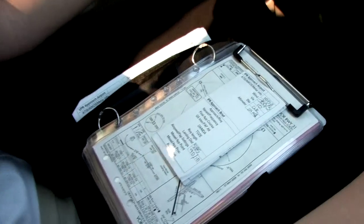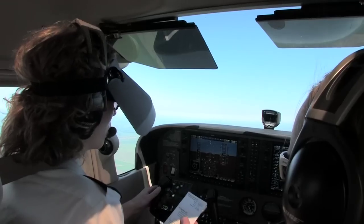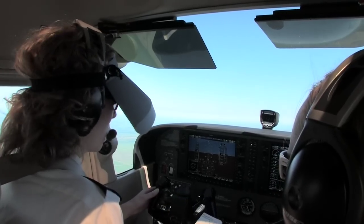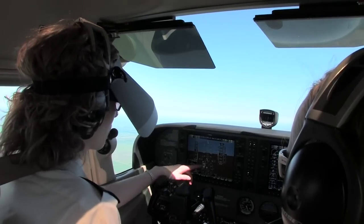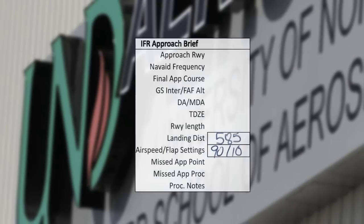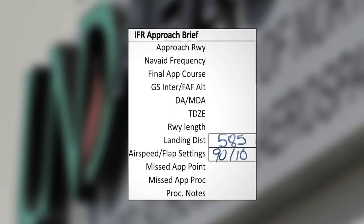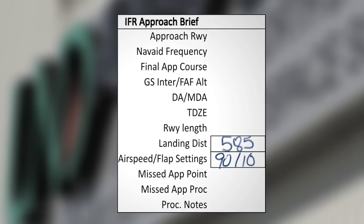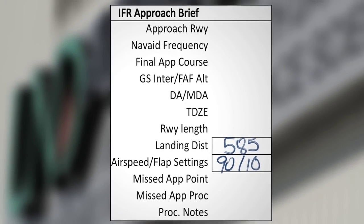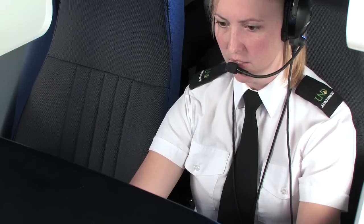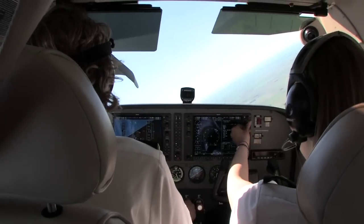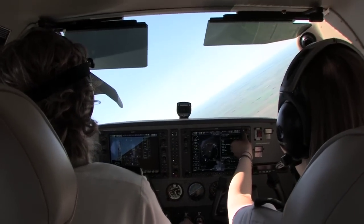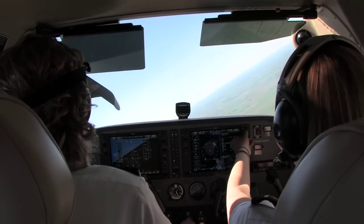Remember that the UND Aerospace Takeoff and Landing Distance card, or TOLD card, should be used when conducting the approach briefing. It contains all of the required items that must be included in this briefing. The pilot should use the approach briefing to physically prepare the cockpit by setting the avionics and organizing approach charts, and to mentally prepare for the approach.